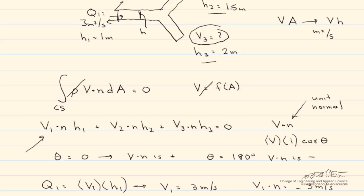We notice with V2, since the angle between the two of them is 0, the cosine of 0 is 1, and V·n is positive.